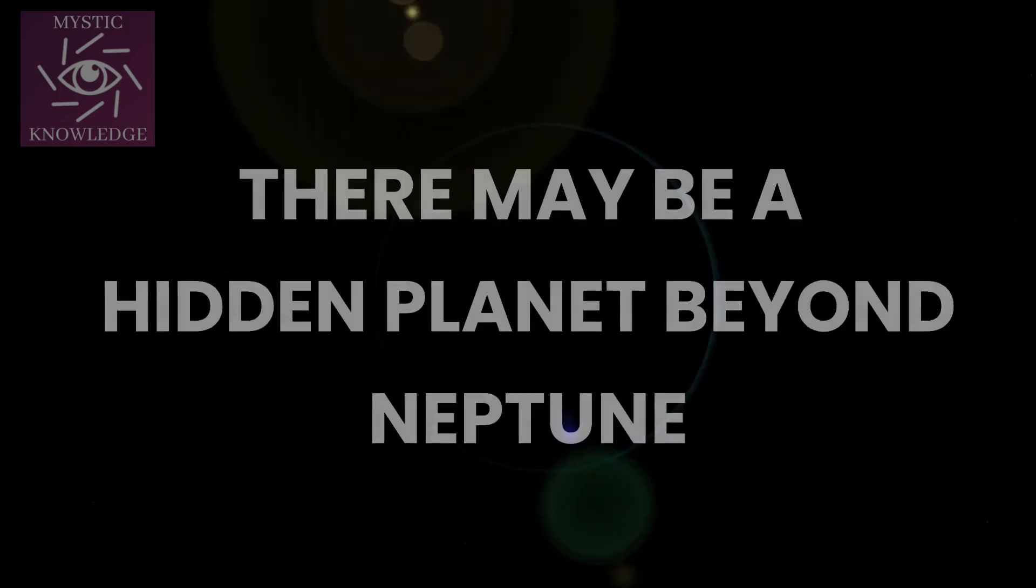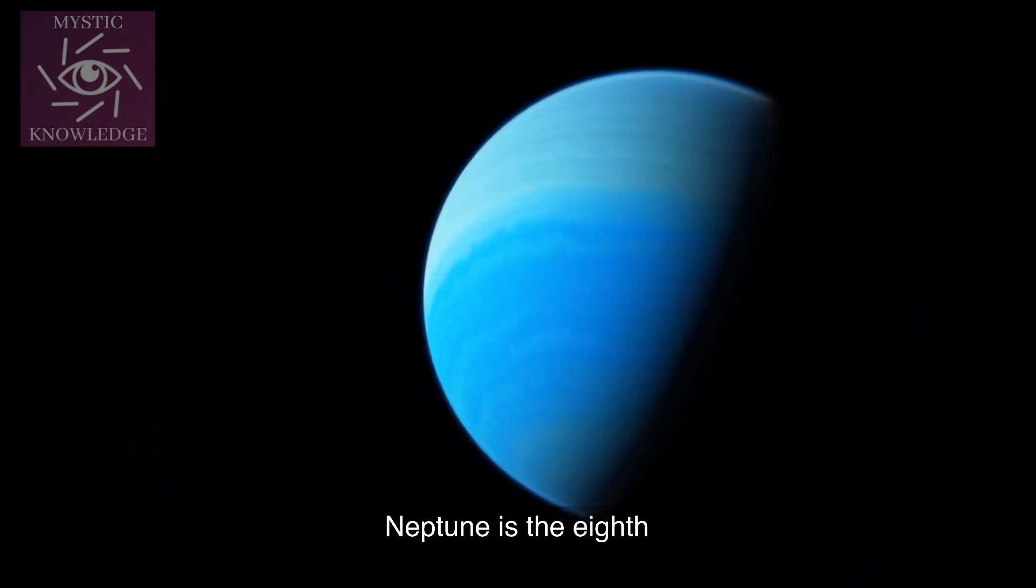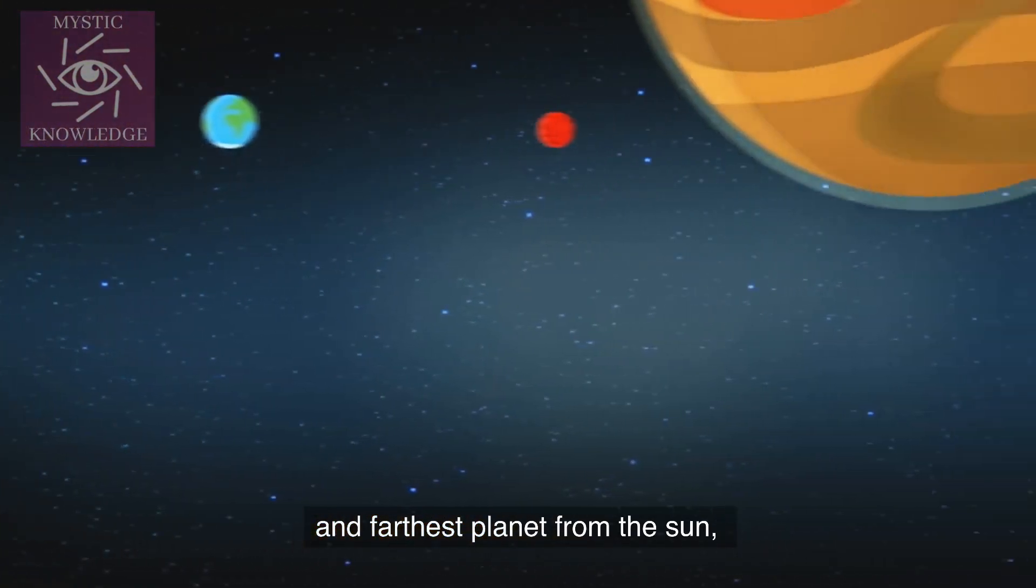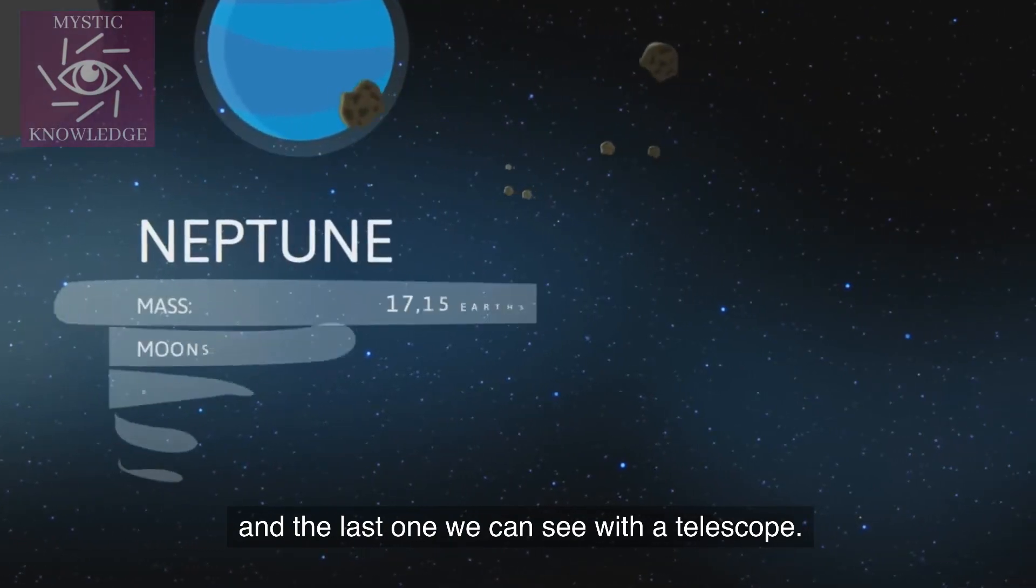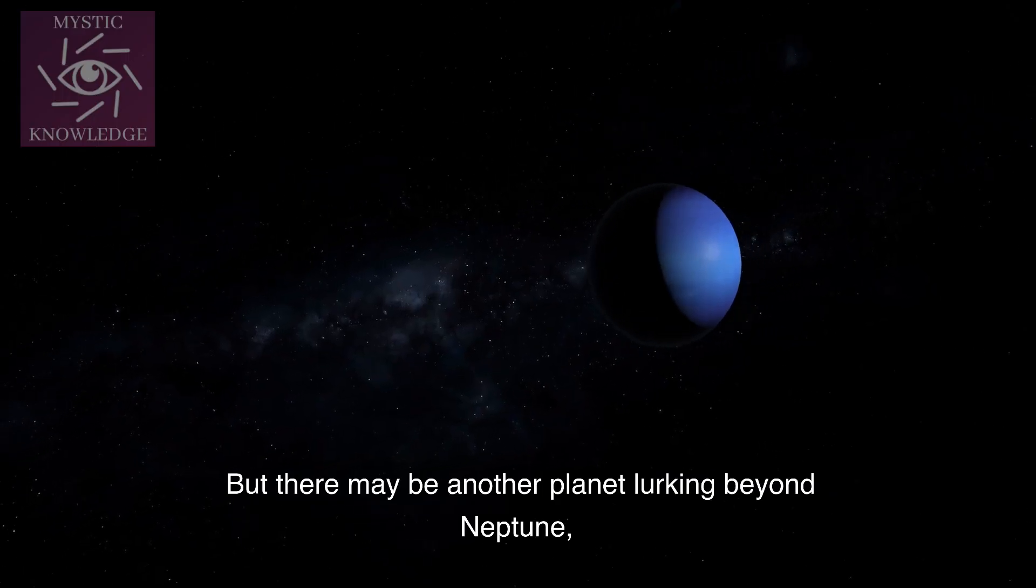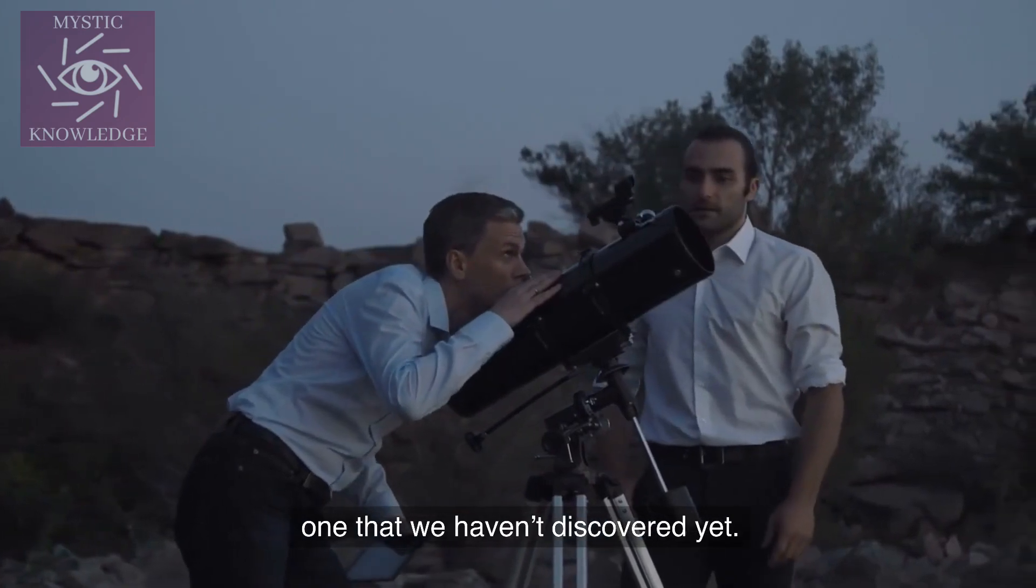Number 1. There may be a hidden planet beyond Neptune. Neptune is the 8th and farthest planet from the Sun, and the last one we can see with a telescope. But there may be another planet lurking beyond Neptune, one that we haven't discovered yet.